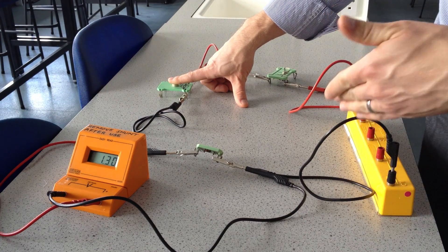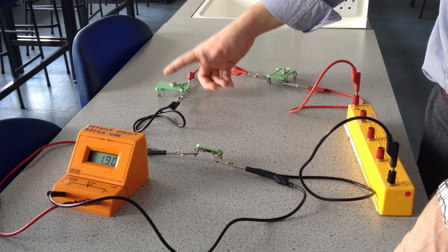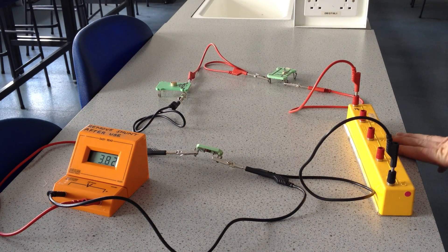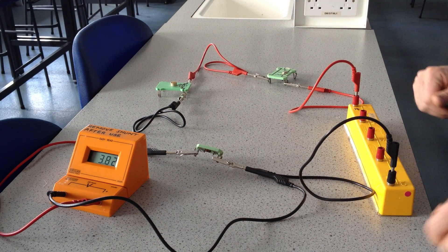Now I will increase the light intensity incident on the LDR. Take my finger off. And the voltage has gone up to about 3.82 volts. So roughly the same as where it was before.